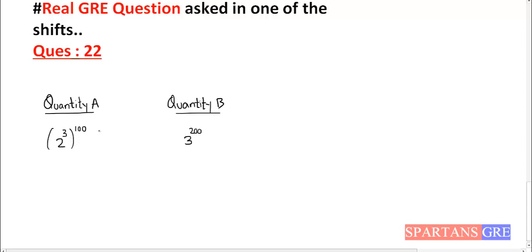Here 2 cube whole power 100. So 2 cube whole power 100 will be 8 power 100. And this one 3 power 200 can be written as 3 power 2 whole power 100.